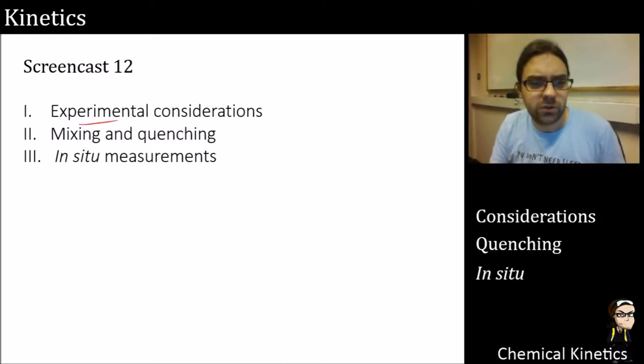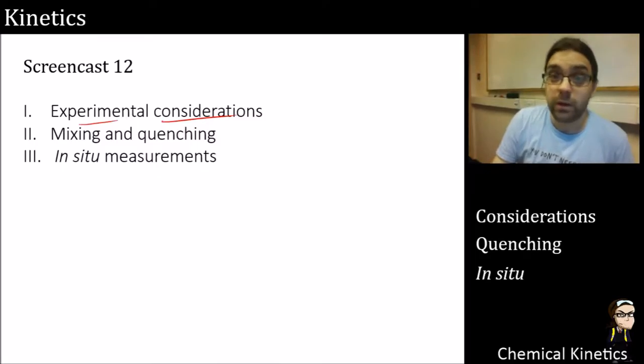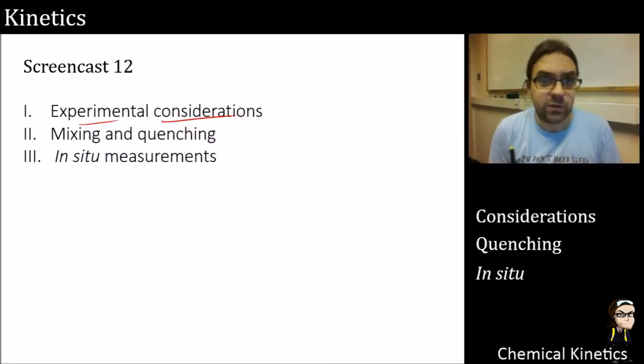So we're going to start with experimental considerations about what do we really need to worry about when we're trying to get this. Because we want to get a rate constant to be as accurate as possible, not just make a guess here. We want to make it accurate. So that means figuring out a couple of the limitations of the techniques. And then we're going to do two methods, one mixing and quenching and the other in situ. So these are two different approaches that we can do to get rate constants.